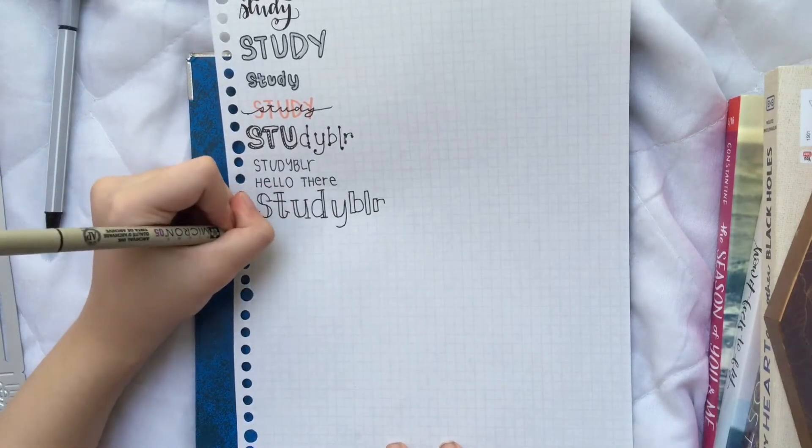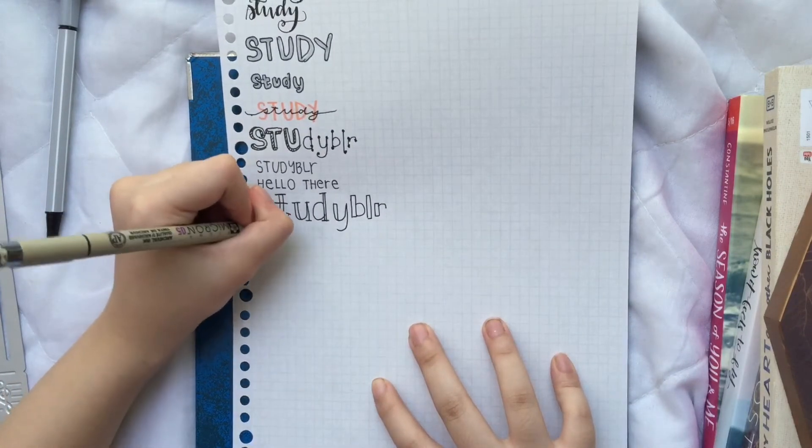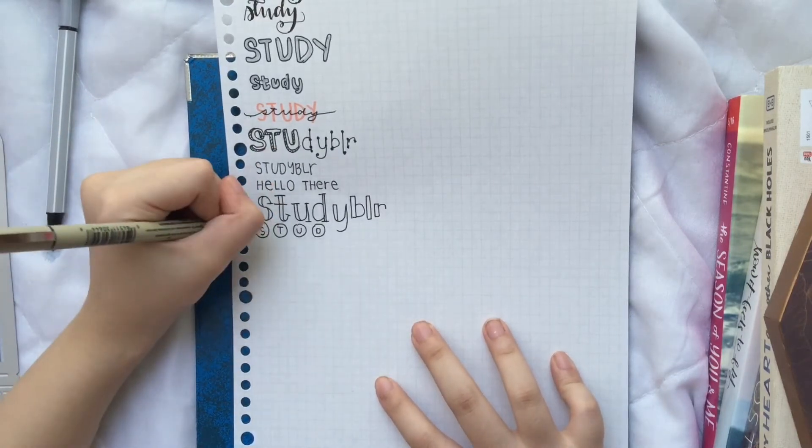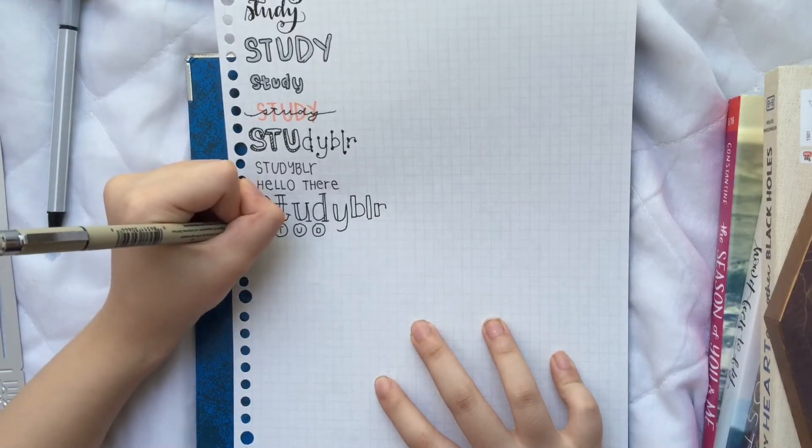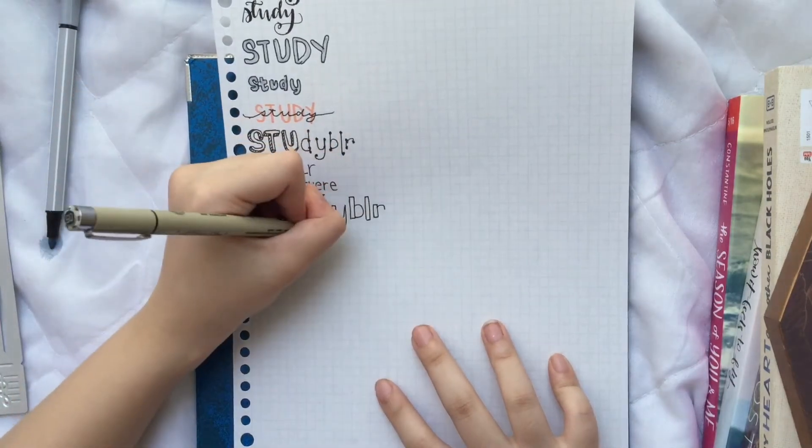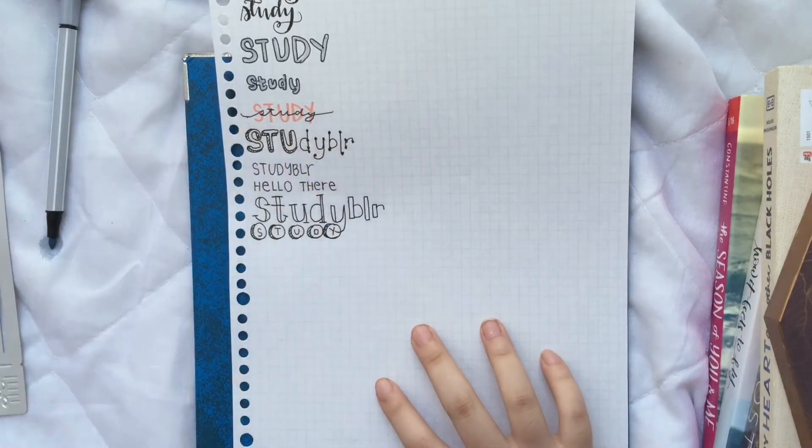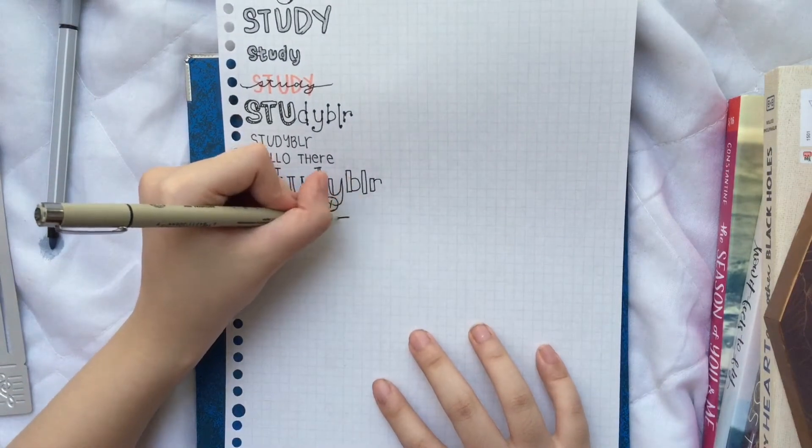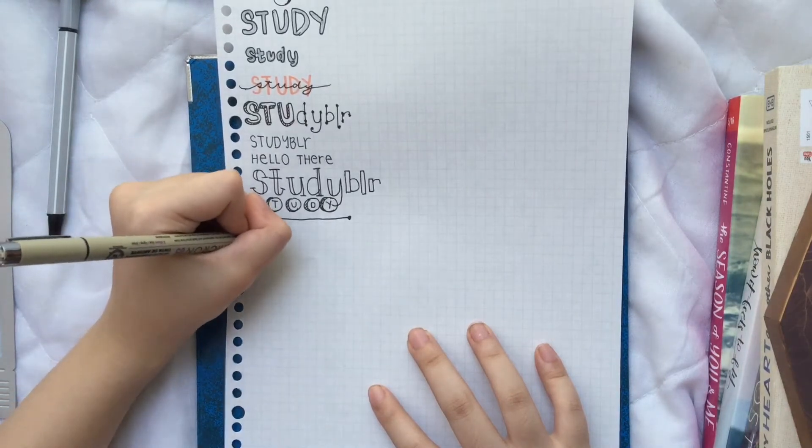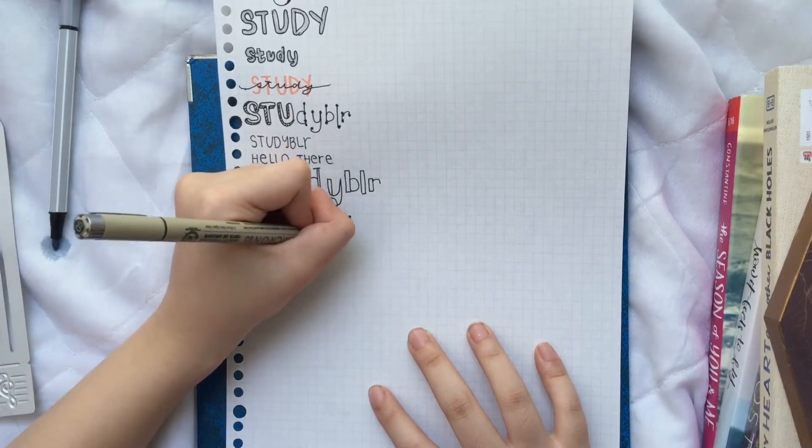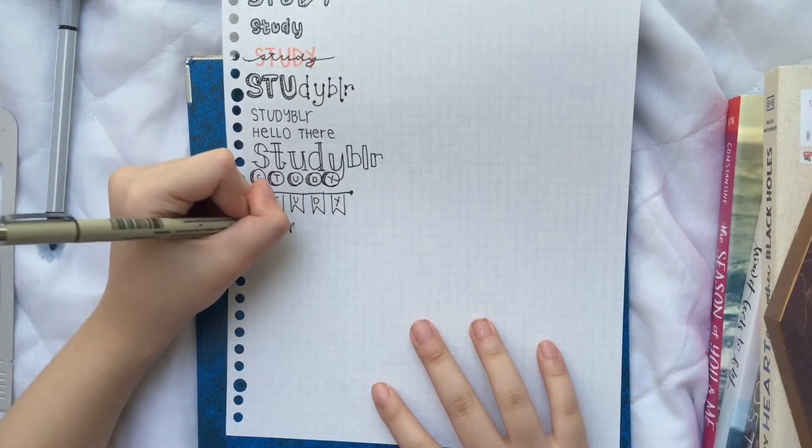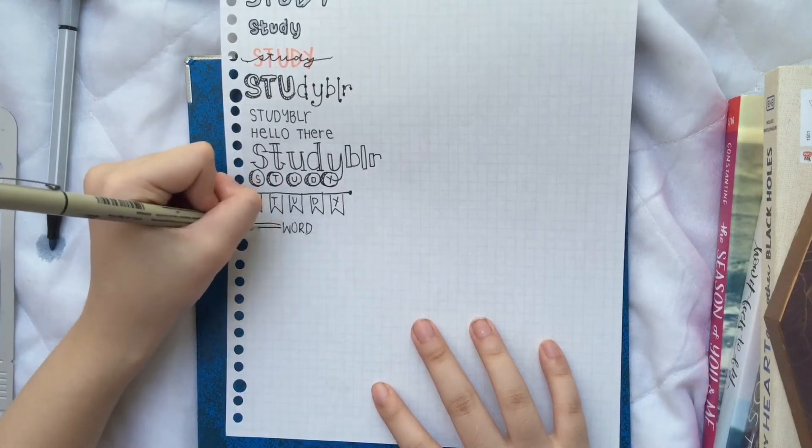And then you can also use circles. So, and then if you want to add more to it, you can also add this to the sides. And then there's also this banner thing, writing the word and then putting two lines beside it.